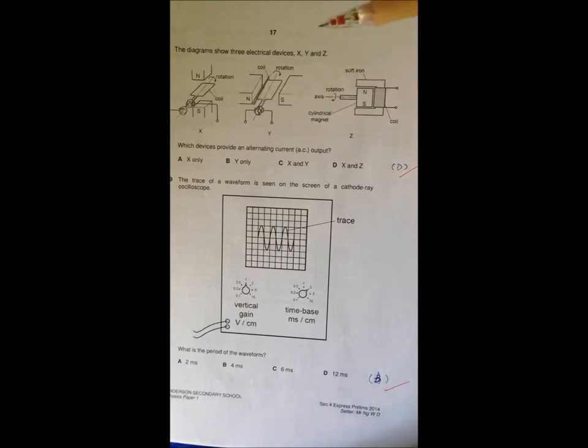In the end, the switching of polarity will be cancelled by this split ring, and therefore in Y you won't get the alternating AC output. I think X and Z are quite straightforward.